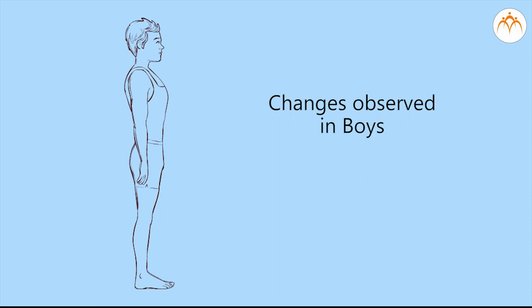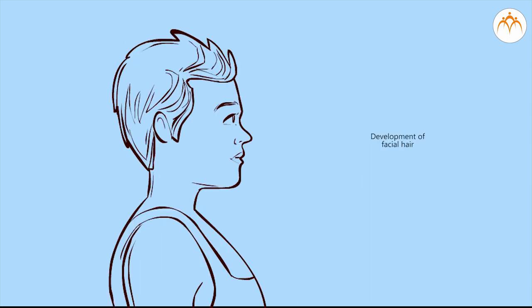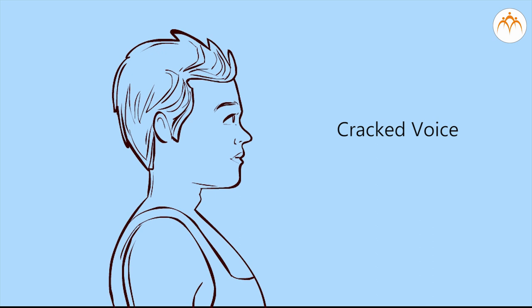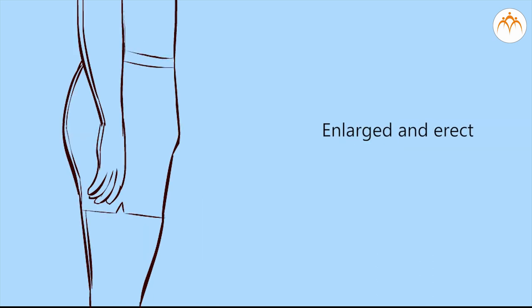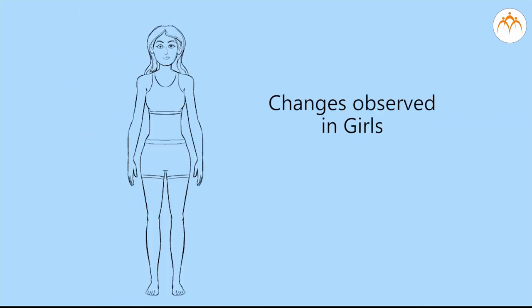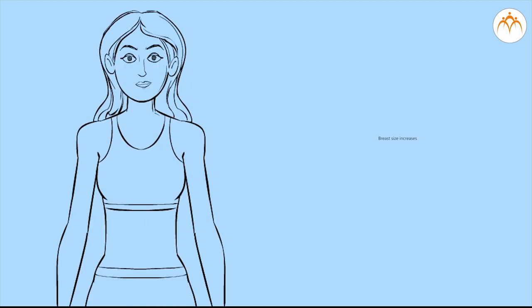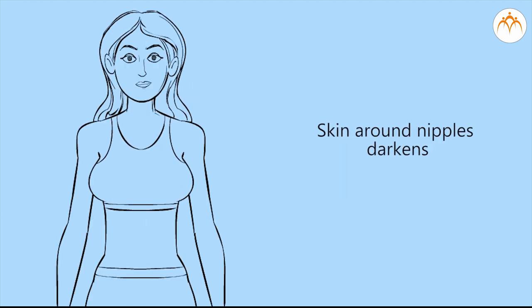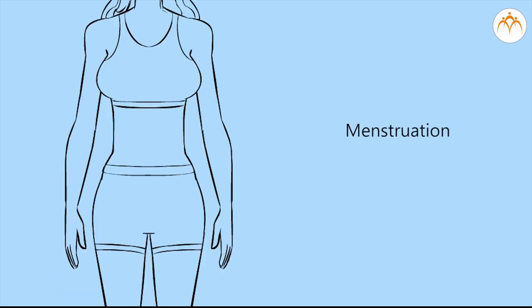Changes that occur in boys include: development of facial hair and cracked voice. The penis may become large and erect. Changes that occur in girls include: breast size increases, skin of nipples darkens, and the reproductive cycle or menstrual cycle begins.